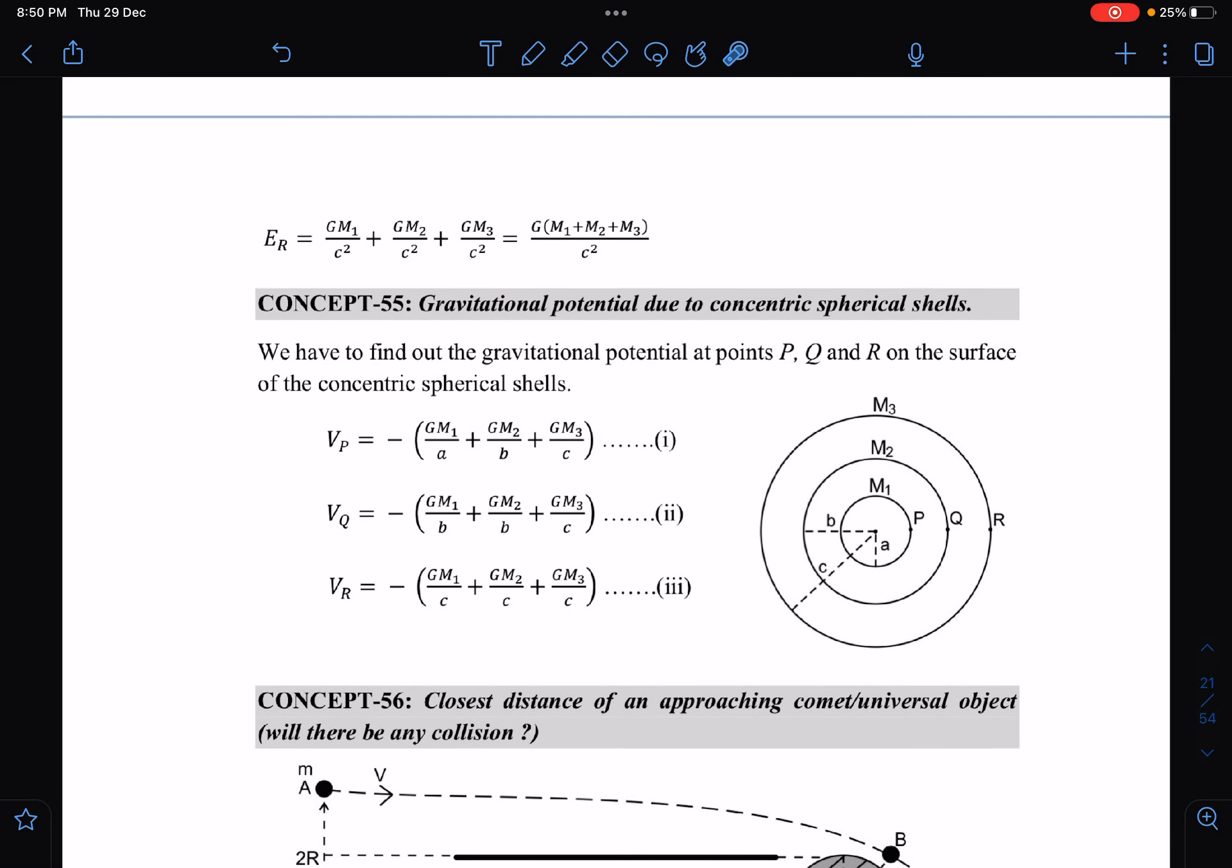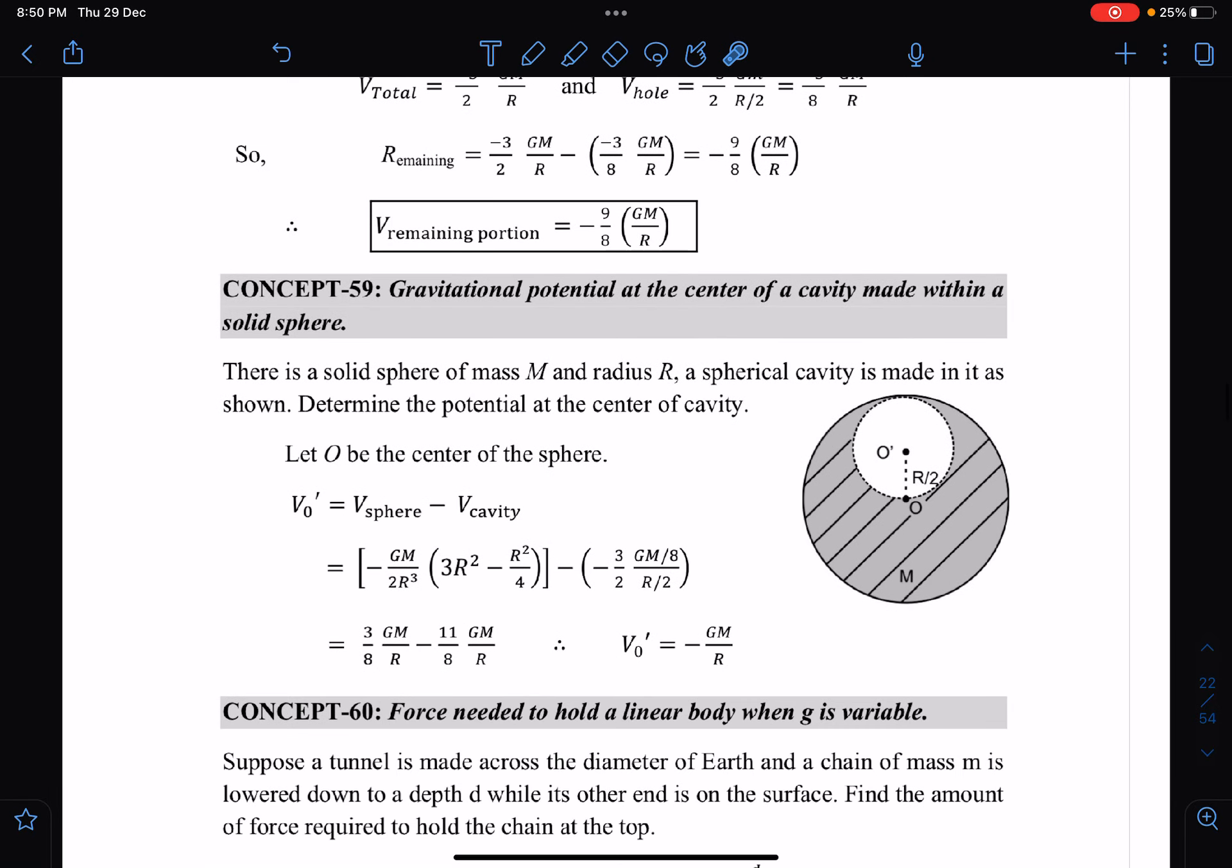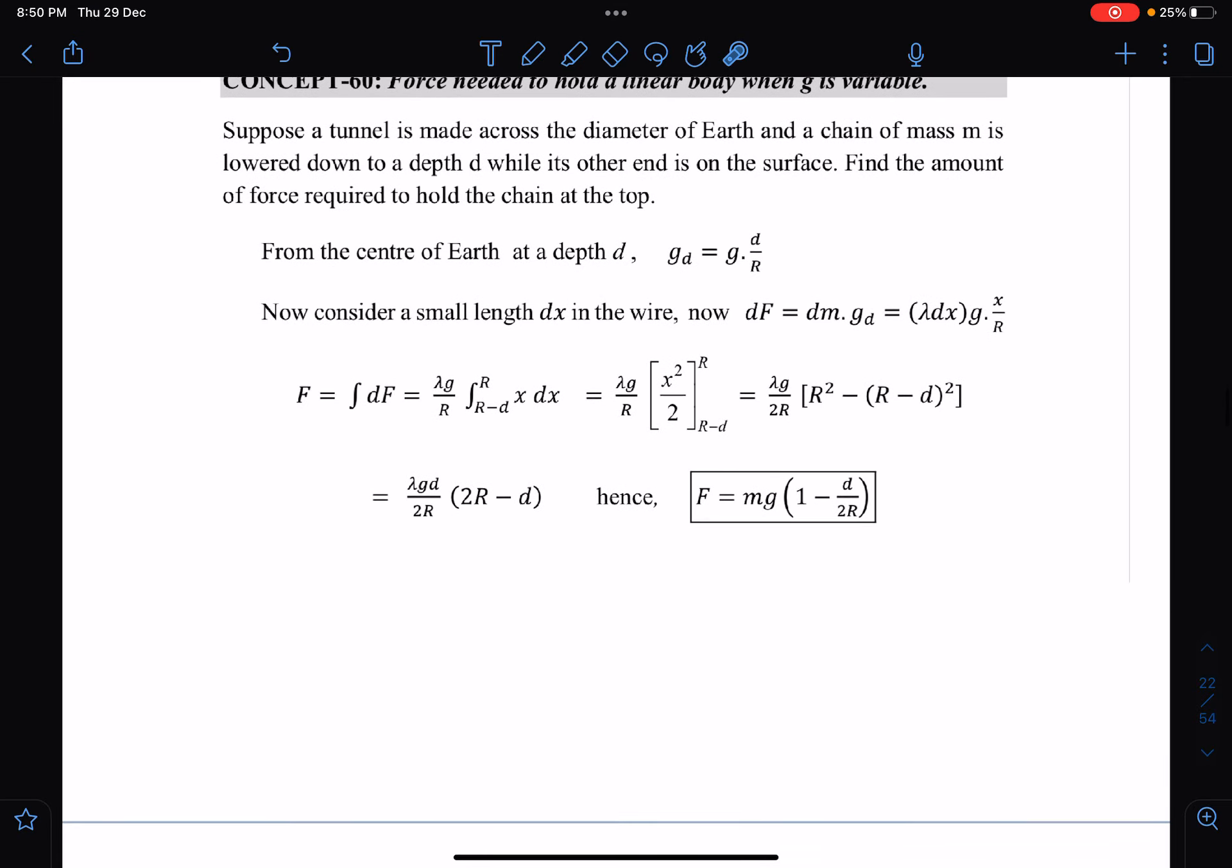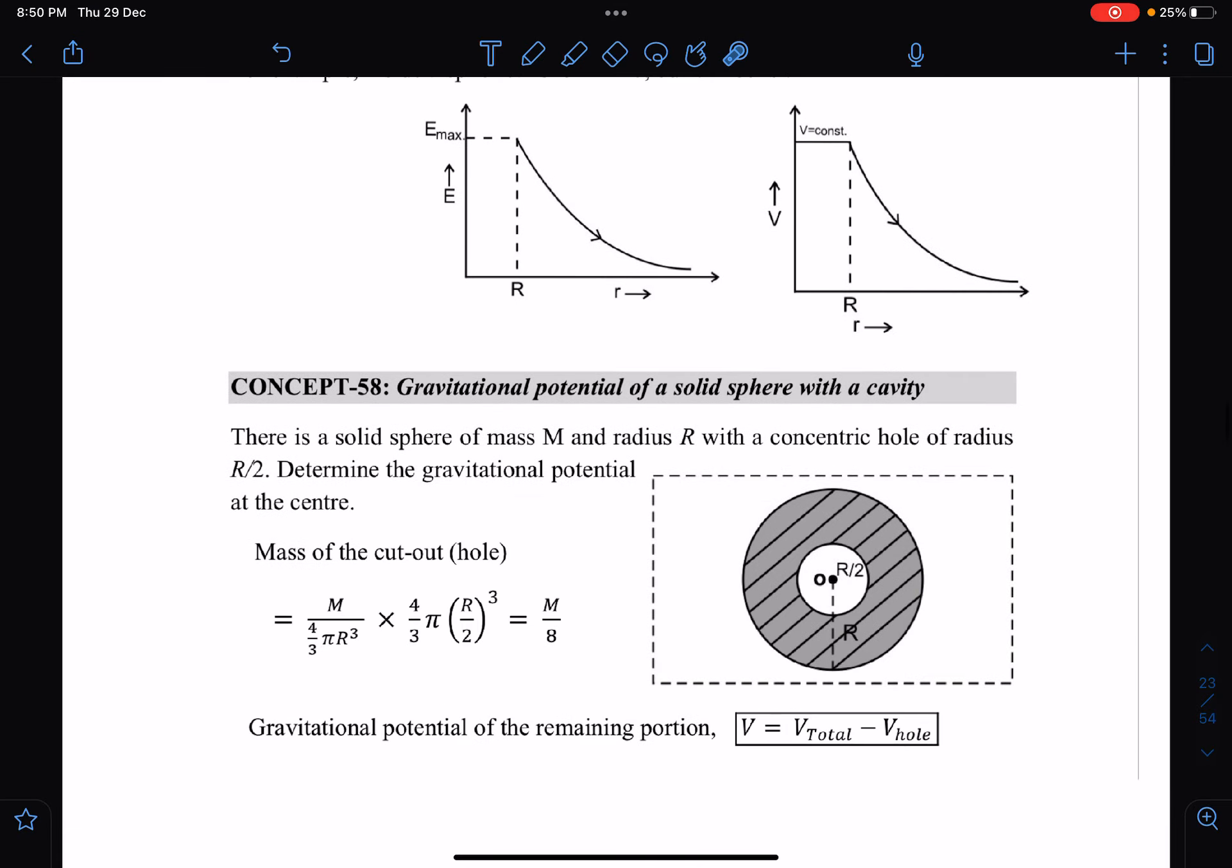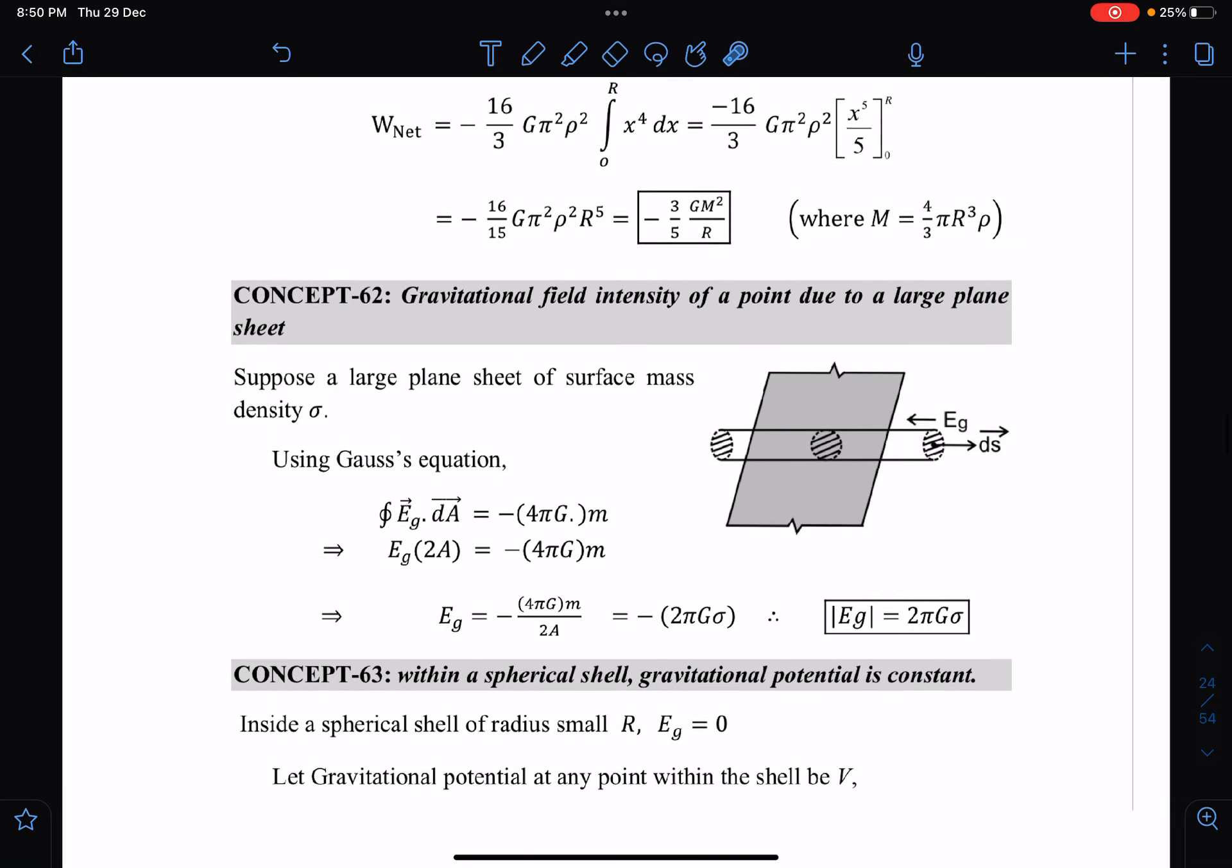Gravitational potential for concentric shells, closest distance of approach, gravitational potential at the center of the cavity. These kinds of questions can definitely come in your exam and they have come in the past, so it's very much possible.